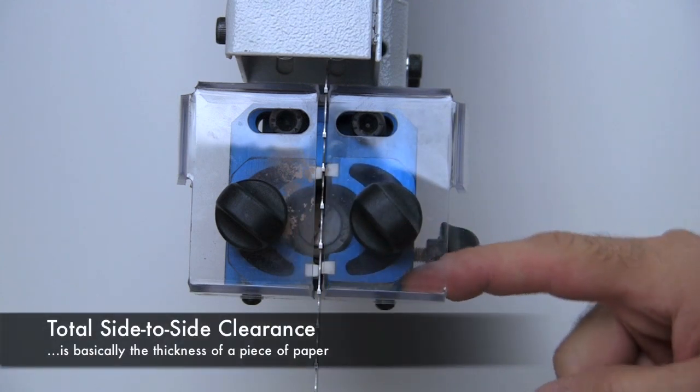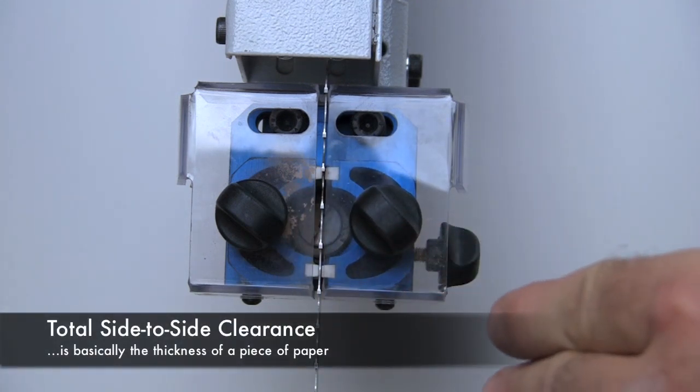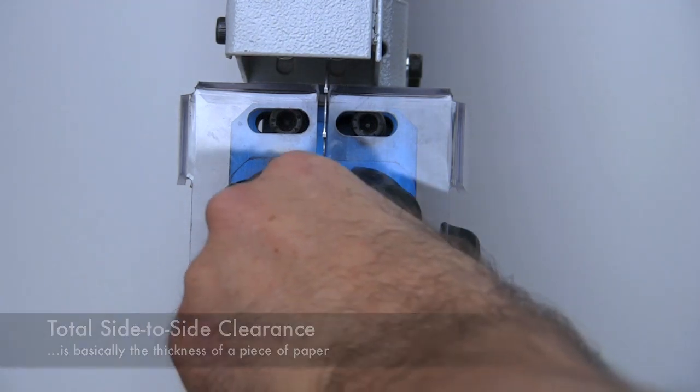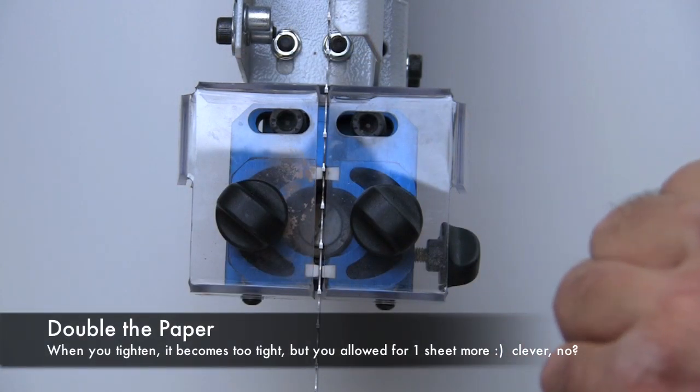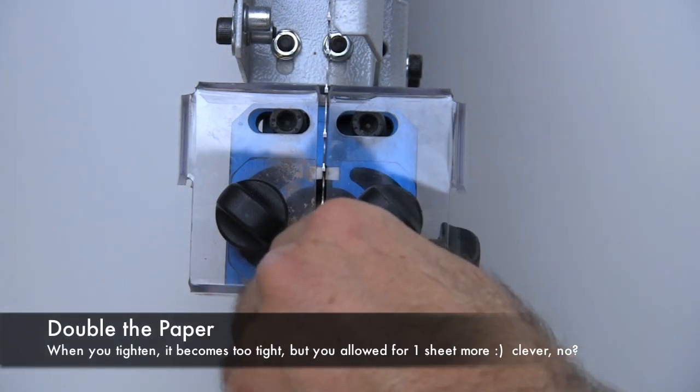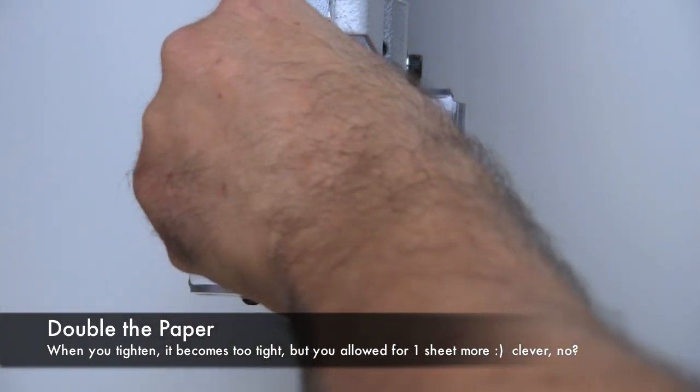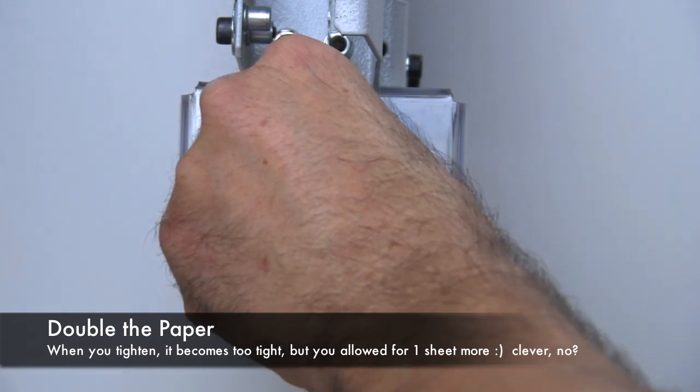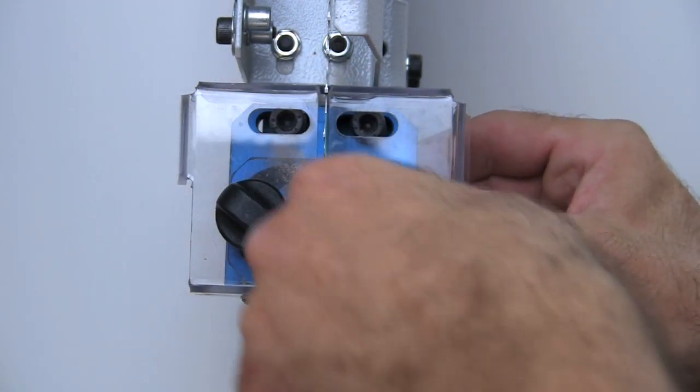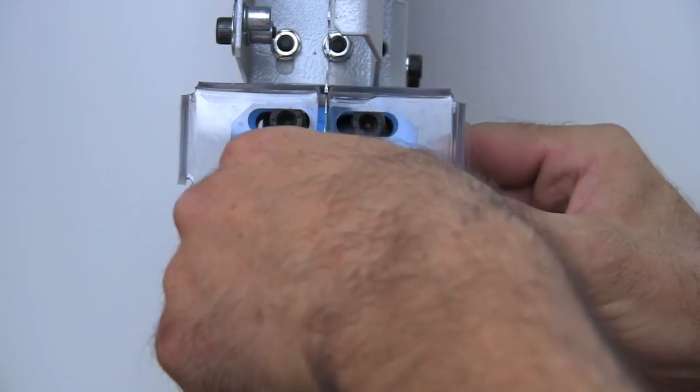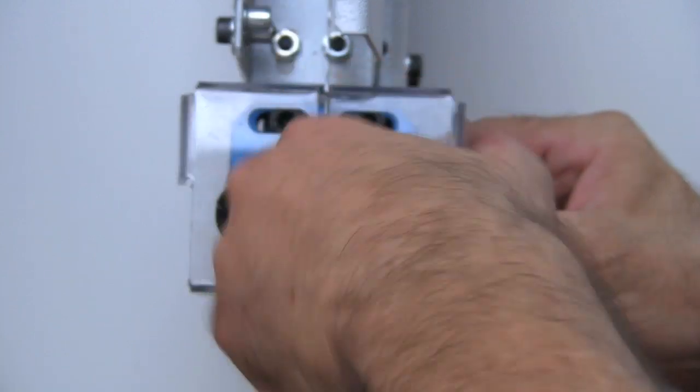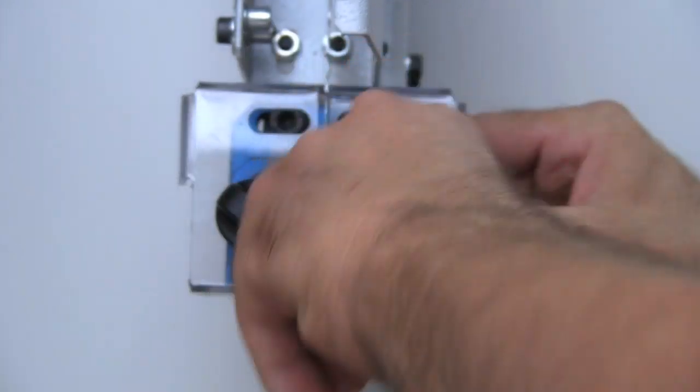So now this one here is loose. The idea is that you want to be able to put a scrap of paper in there so that you can run the blade. What I do is I double the paper. So let me stick this paper in there. There we go. Now it's a lot easier. I press till it's touching.